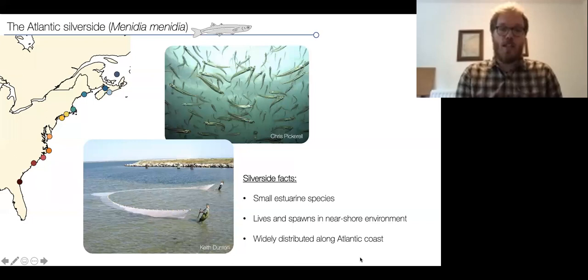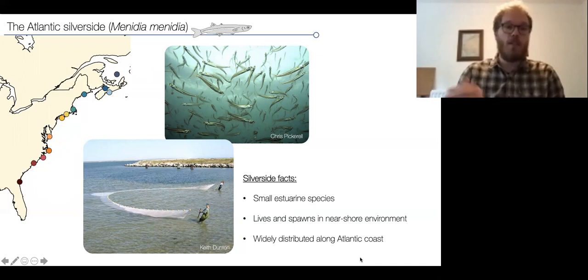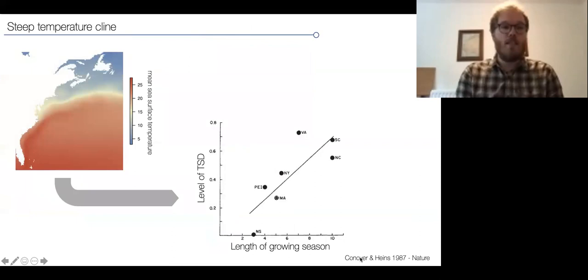Atlantic silversides are small estuarine species that live in shallow waters. We can catch them during spawning time right at the beach. They're widely distributed along the Atlantic coast, all the way from northern Florida to the Gulf of St. Lawrence. Ultimately, they're experiencing a steep temperature cline, some of the steepest temperature clines on Earth, with mean sea surface temperatures about nearly 25 degrees in northern Florida to about 5 degrees mean temperatures in the Gulf of St. Lawrence. Basically, this determines, to some extent, due to influencing the growing season, the level of temperature-dependent sex determination.